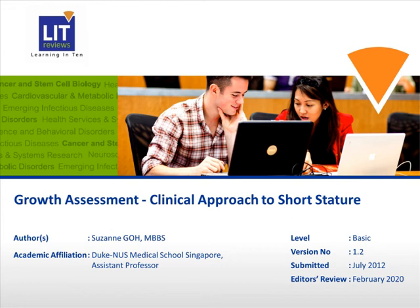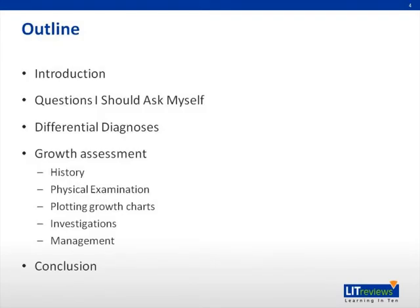This VAP focuses on how to assess vertical growth in a child, and specifically how to approach a child with short stature. The aim is for you to learn how to think critically and clinically about how a child grows and the possible factors that may be contributing to poor growth.